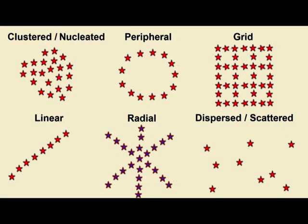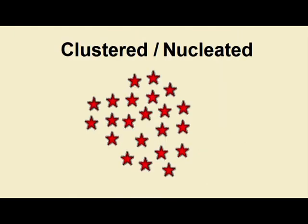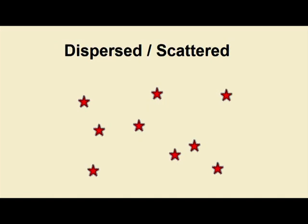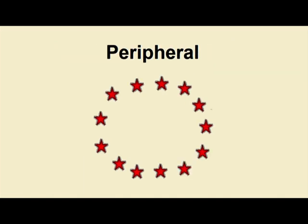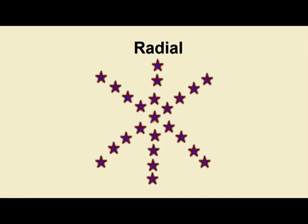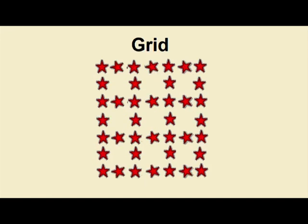On screen here are some of the main spatial patterns studied by geographers. These include clustered or nucleated, dispersed or scattered, linear, peripheral, radial, and grid-like patterns.